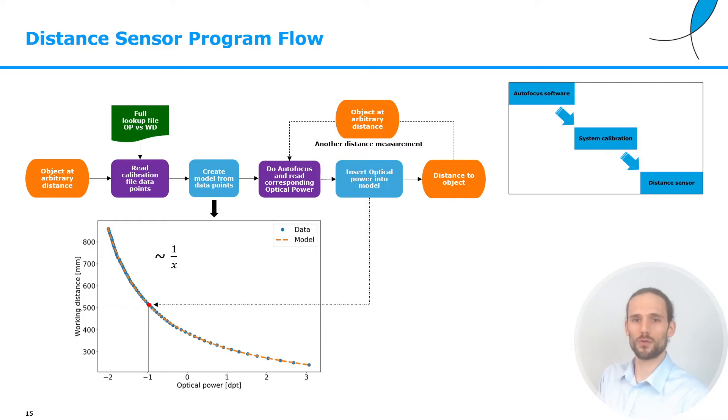Of course, one can move the object to another position and run another distance measurement, do another autofocus, and retrieve the distance by looking at the optical power at which the object is in focus.